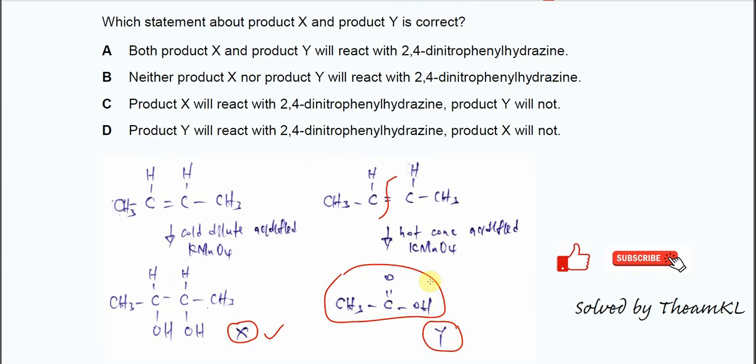Then, which statement is correct? Both product X and Y will react with 2,4-DNPH. 2,4-DNPH is the testing reagent. It's a reagent to test the presence of aldehyde or ketone. If there is a ketone or aldehyde, then it will form the orange precipitate.